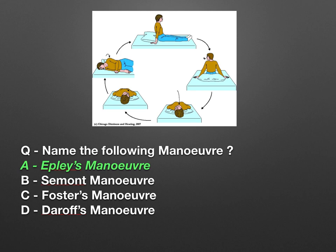Now the picture is showing the images of a maneuver. The options are Epley maneuver, Semont maneuver, Foster's maneuver, and Diaropes maneuver. The above image is called the Epley maneuver, and it is the most used maneuver nowadays in patients of vertigo — very helpful in treating them.